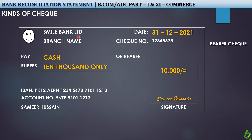Now, when I give you the same check but I draw two parallel lines across it, we call this a cross check. What will happen? Whoever takes that cross check to the bank cannot get cash. Smile Bank will not give cash because two parallel lines are drawn. We do not cash this check.